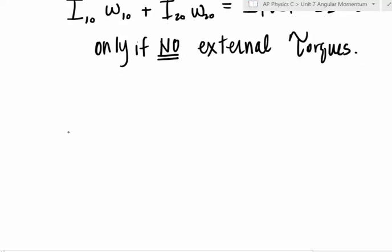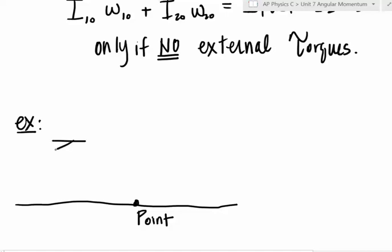So let's look at an example. Here's the ground and here's a point on the ground, point P. Not a momentum, but a point. And here's an airplane. Our airplane's moving along with a velocity V and at this instant it's this distance R from point P.